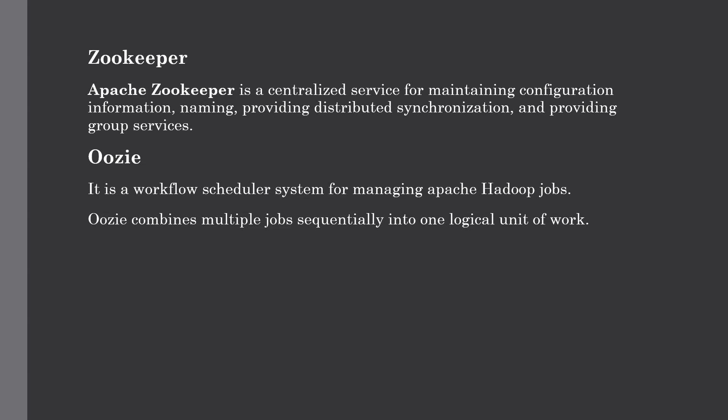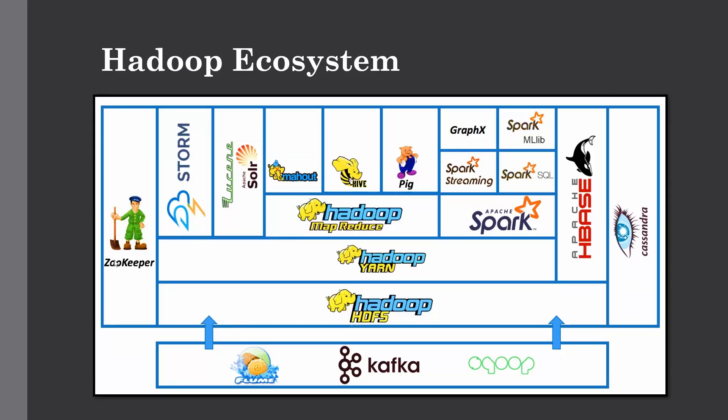Our next component is Zookeeper. Zookeeper is a centralized service and part of the Hadoop ecosystem which is used for maintaining configuration information, naming, and providing group services. It manages and coordinates large clusters of machines. As you can see in the chart, Zookeeper sits beside all the services as a centralized service and can maintain all Hadoop ecosystem components deployed into your Hadoop cluster.